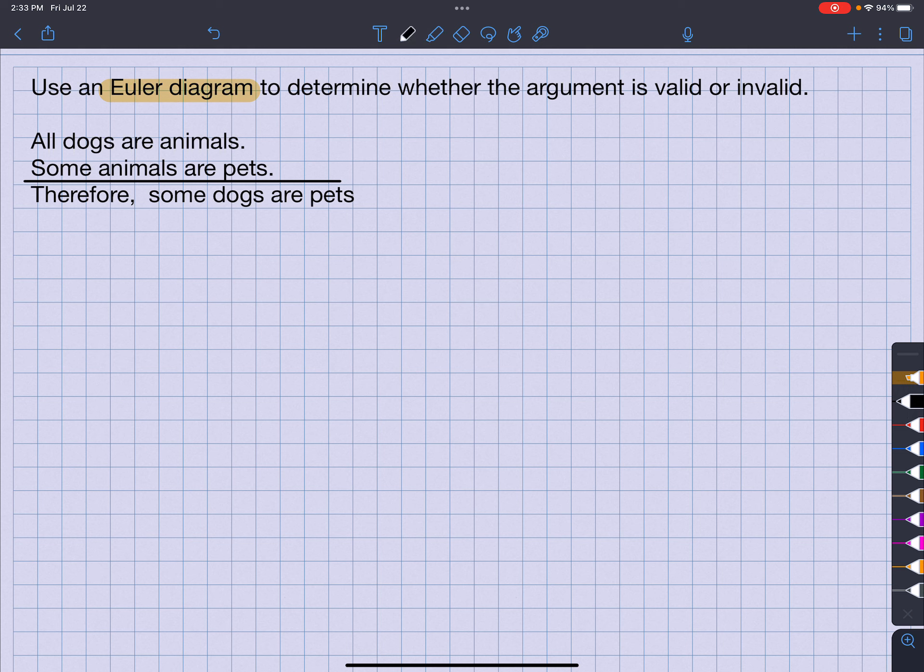Okay, so it says that all dogs - so this represents dogs - are animals. So we'll call this animals. Okay, so all dogs are inside the animal circle.